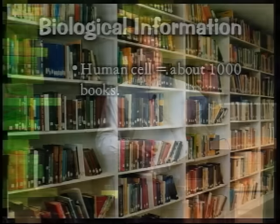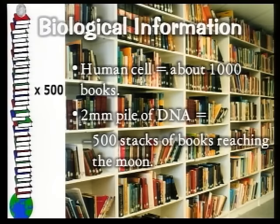Scientists know DNA is information, and yet they stand firm in their belief that this information just popped into existence through natural processes. There are 3 billion base pairs of DNA in the average human genome — 3 billion. One human cell contains about as much information as you will find in 1,000 books. A millimeter pile of DNA contains about as much information as 500 stacks of books reaching to the moon, or a single stack reaching to the sun. It's an incredible amount of information.